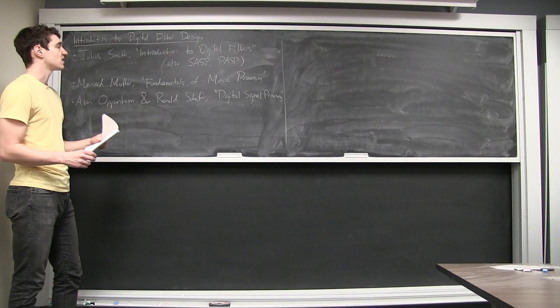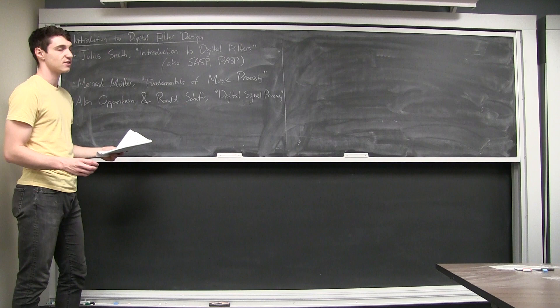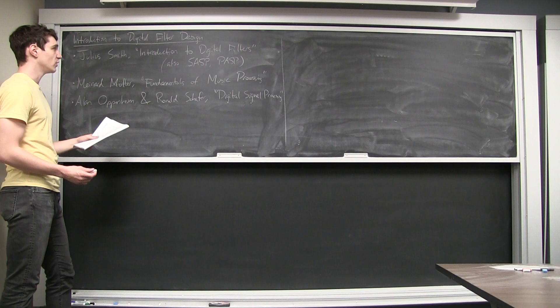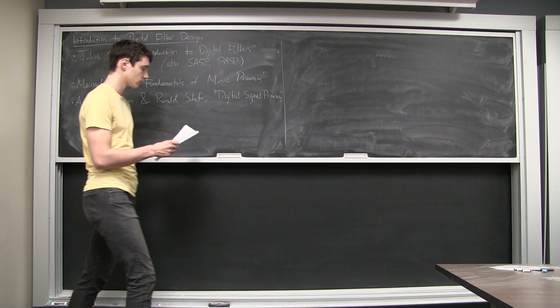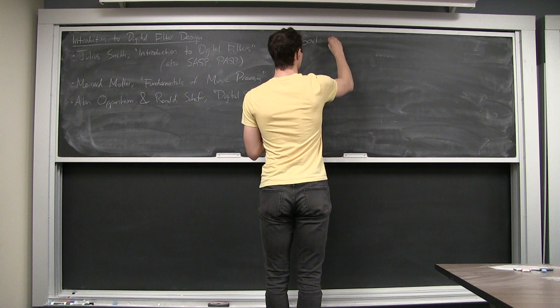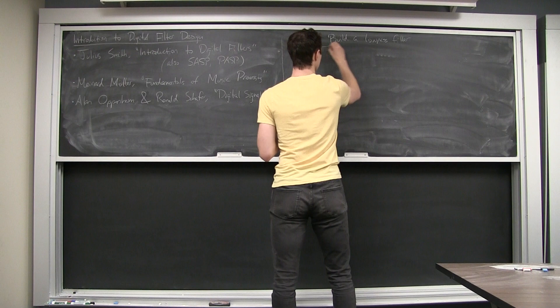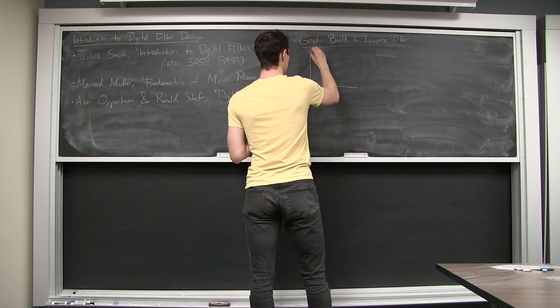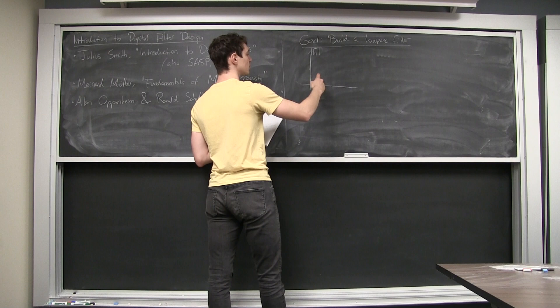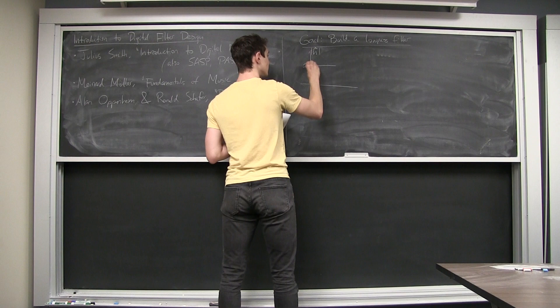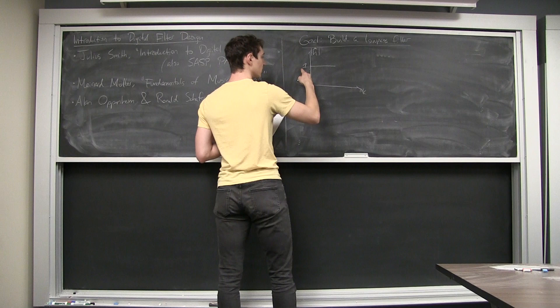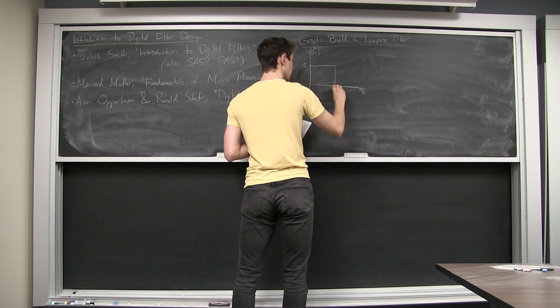Compared to the previous talk, where I talked about how to analyze a filter that's been given to you, in this talk we're going to look at one of the issues that comes up when you try to build a filter yourself that does a given thing. Our goal for this talk is to build a low-pass filter. The ideal is to have some amplitude response: you want your filter to multiply on the Fourier side by one for low frequencies and set all other frequencies past some critical threshold to zero.